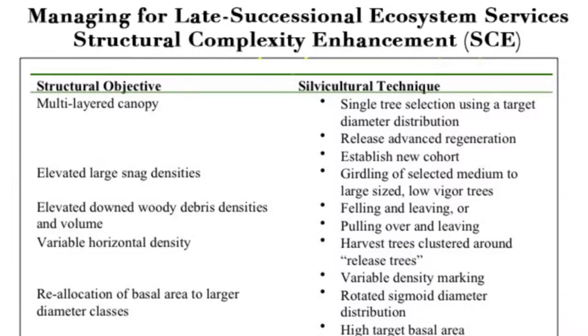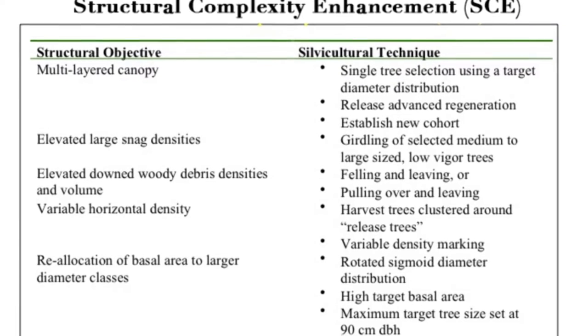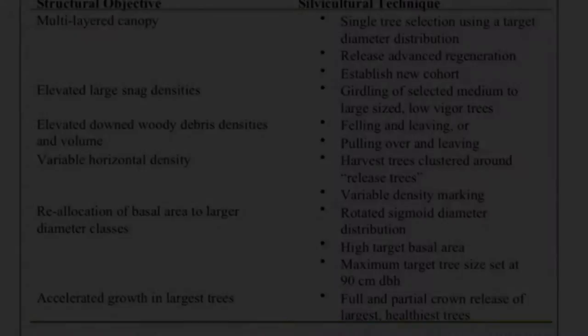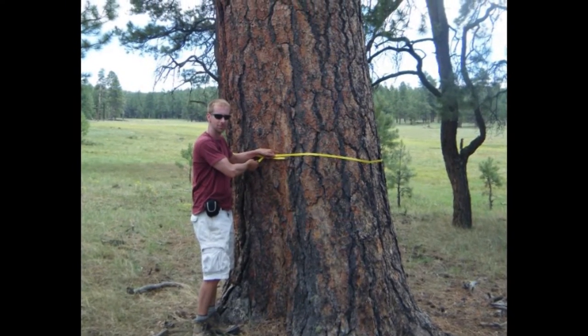In this particular study we're testing an approach that manages for late successional forest conditions and promotes the development of old growth characteristics over time. The hypothesis is that this would yield carbon storage benefits, biodiversity benefits, and other things. That idea is not necessarily popular with everyone, but it's gaining traction. It's only through research like this — collecting long-term data and probing these questions — that we can substantiate these hypotheses and convince folks of the merits of this approach.